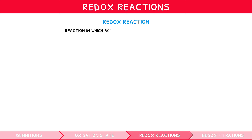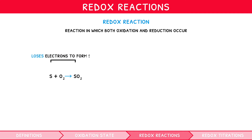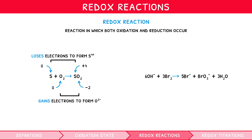A redox reaction is a reaction in which both oxidation and reduction occurs. For example, in S + O₂ → SO₂, sulfur loses electrons to form the S⁴⁺ ion within SO₂ and increases its oxidation state from 0 to +4, while oxygen gains electrons to form the O²⁻ ion within SO₂ and decreases its oxidation state from 0 to −2. It is also important to note that oxidation and reduction can occur to the same species — in one example, bromine increases its oxidation state from 0 in Br₂ to +5 in BrO₃⁻, but decreases from 0 in Br₂ to −1 in Br⁻, so it is both oxidised and reduced. When the same species is oxidised and reduced, we term this a disproportionation reaction.